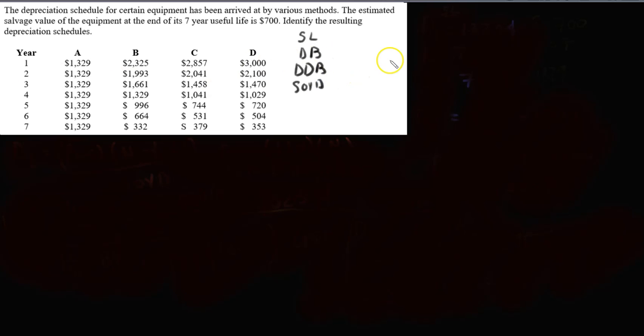So let's write our knowns as usual. We're given the salvage value S equals $700 after 7 years. We're given the actual life of the object N equals 7 years, and that's it.